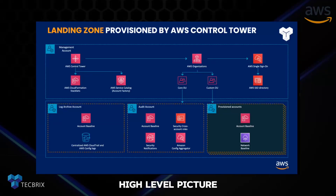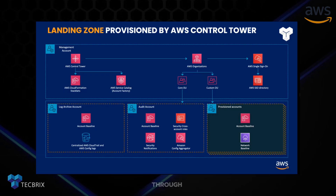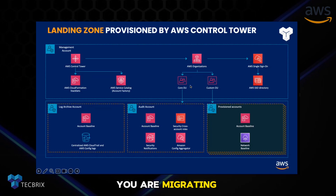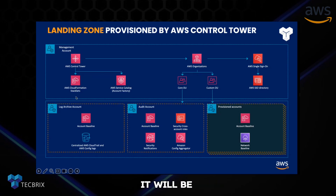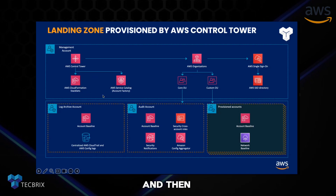This is the overall high-level picture. Once you create the landing zone through Control Tower, this is what you get. For example, you are migrating to the AWS Cloud, and you have one management account where you will be deploying this AWS Control Tower. It will be using CloudFormation stack sets, all managed by AWS, and then it will be creating this organization.